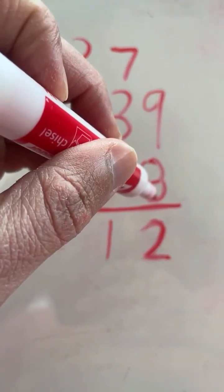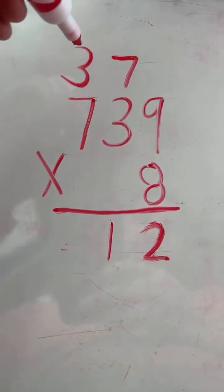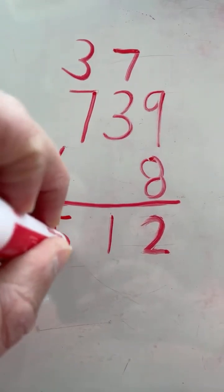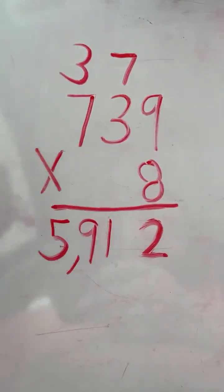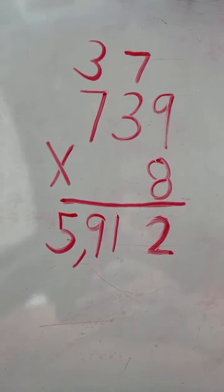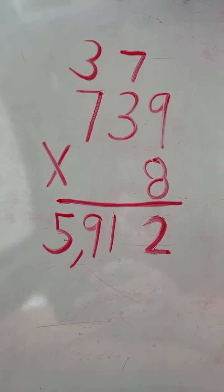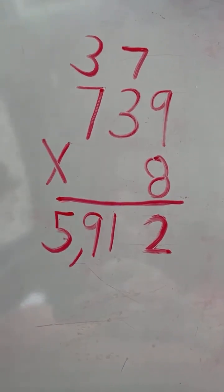7 times 8 equals 56, plus 3 equals 59. And we have our final answer: 739 times 8 equals 5,912.